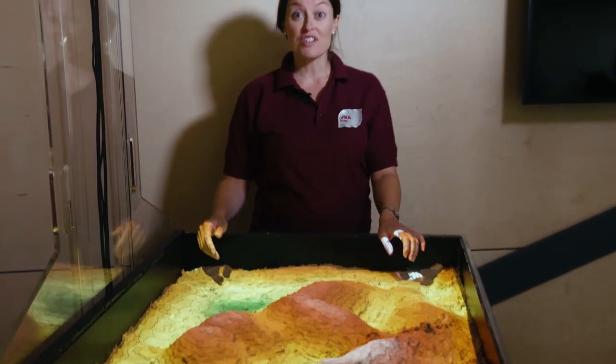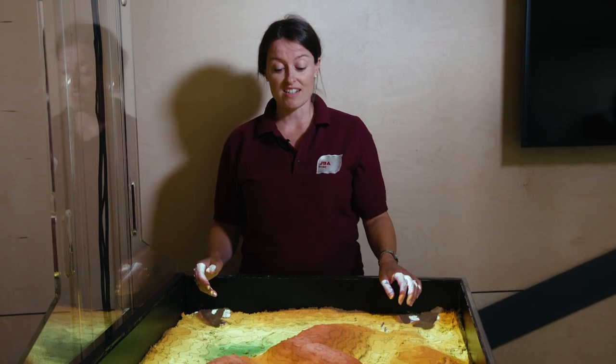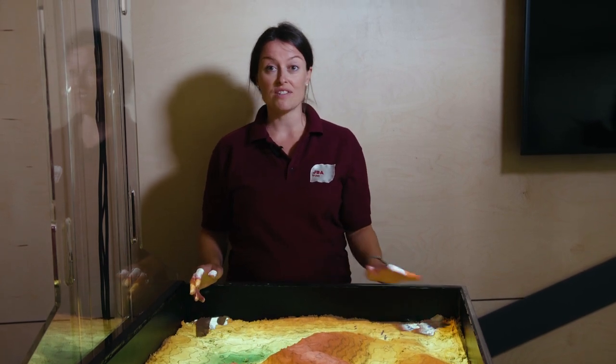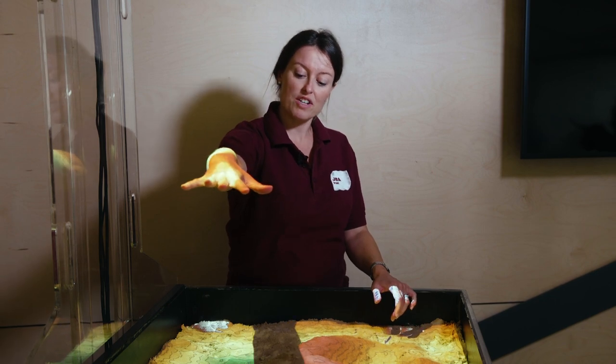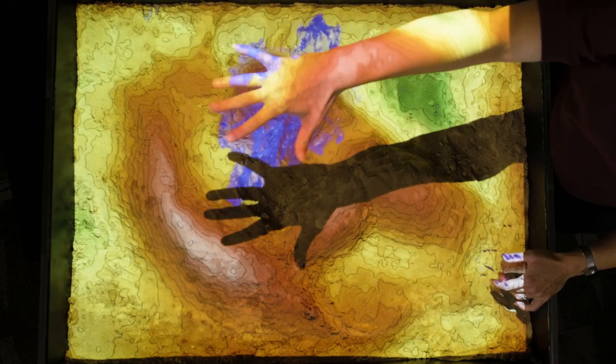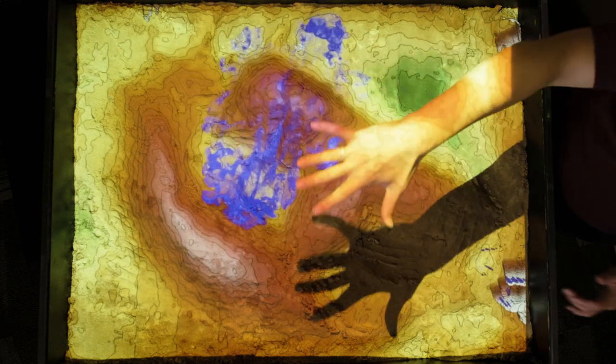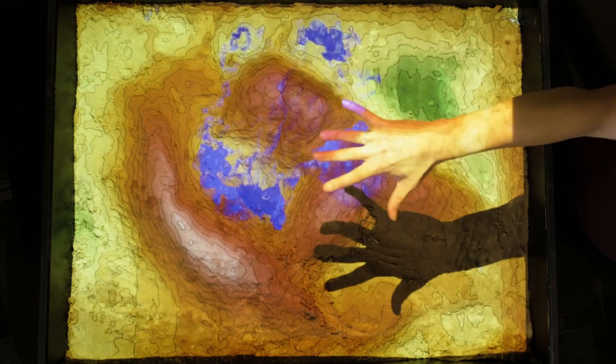What we can also do is introduce water and see how it flows over different features within the catchment. You can just hold your hand over a particular part of the catchment and see how the water flows and moves over the different types of topography.